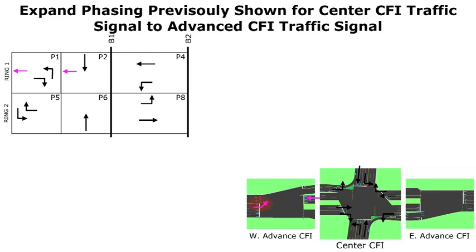Now I'm going about adding the phases at the advanced CFI traffic signals. I'm showing where I want to operate the phase for the movement away from the center CFI, and I'm highlighting the advanced left turn with a red highlight — where am I going to put this phase? I don't want to disrupt that westbound advanced movement going away from the center.